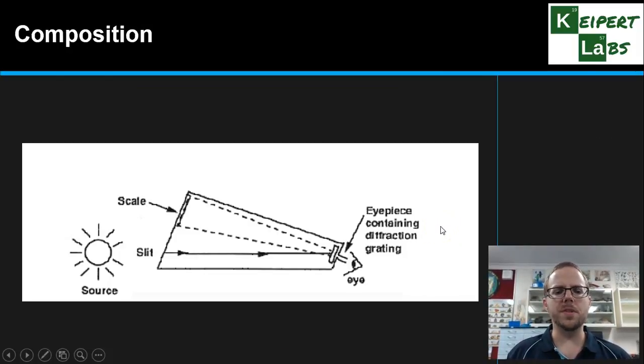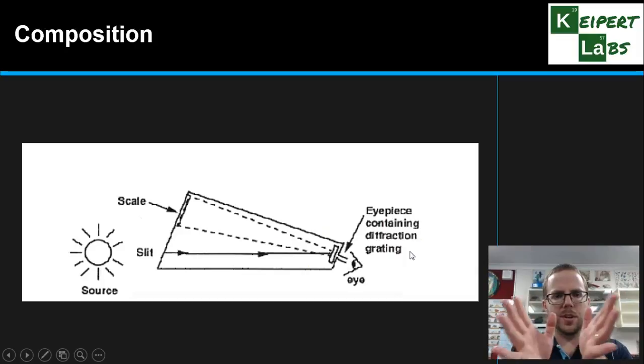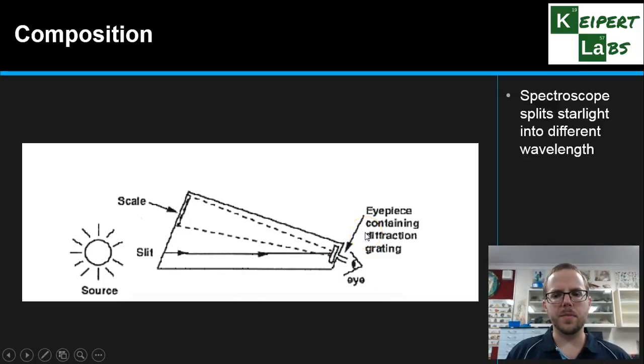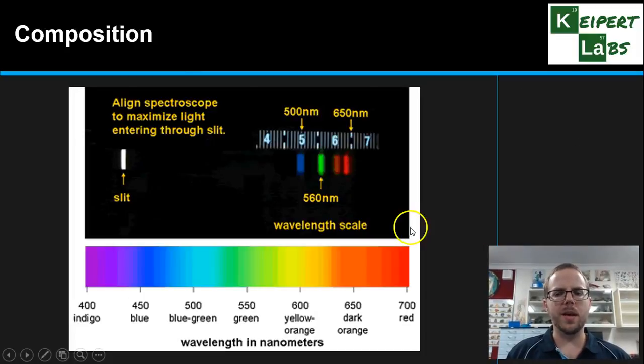We can also work out the composition of the star, so what elements exist inside that star. This is showing you a cross-section of how a spectroscope works. You take light from the source, through a slit, then it's split with a diffraction grating, or a material that it passes through that separates the different wavelengths from each other, and then you look through that end and can see those different bands. So it's splitting into those different wavelengths, and then it has a scale at this end that you can use to identify the wavelengths.